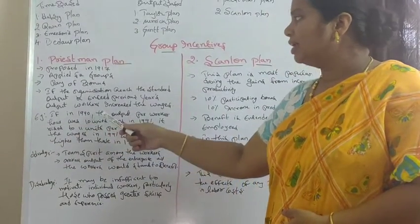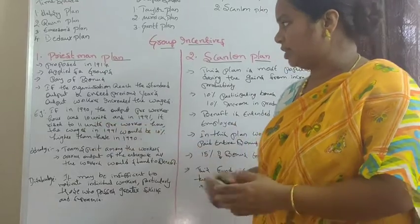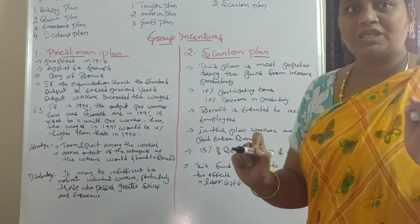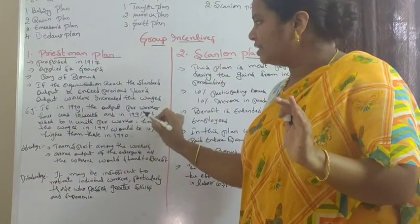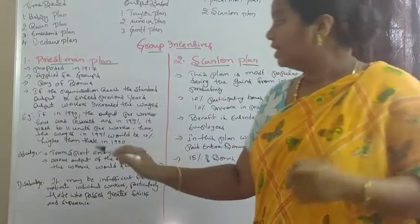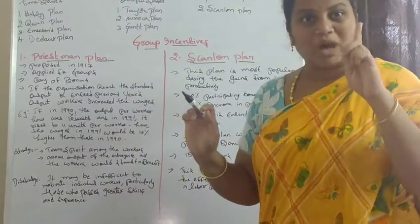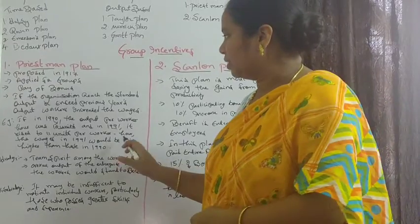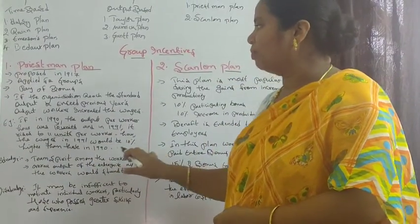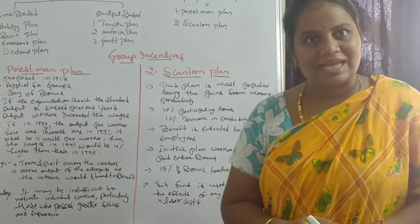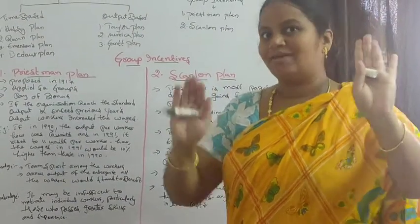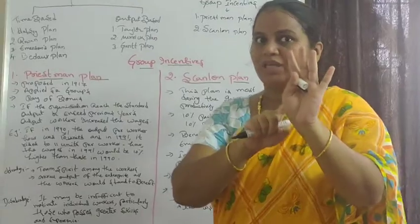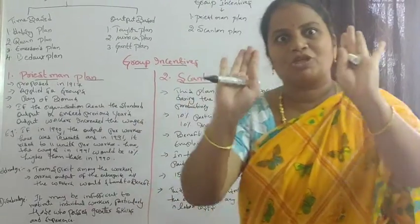For example, in 1990 the output per worker hour was 10 units. In 1991, it rose to 11 units per worker. So the wages in 1991 would be 10% higher than those in 1990. The production increased because workers already had experience from the previous year.